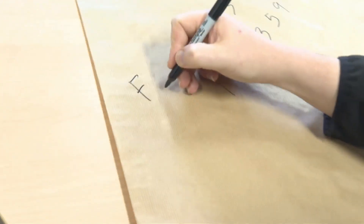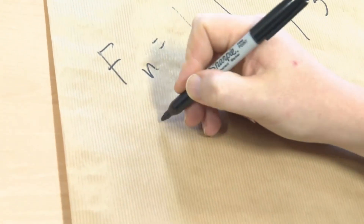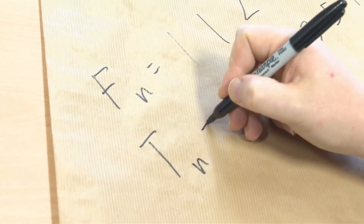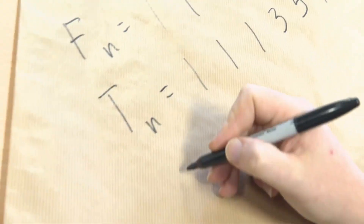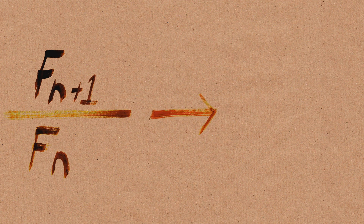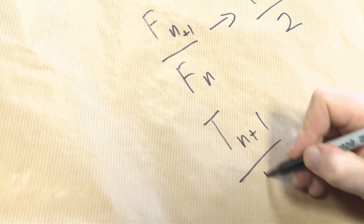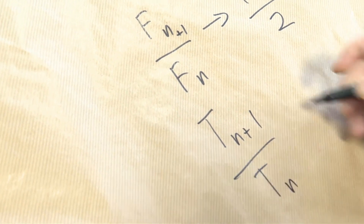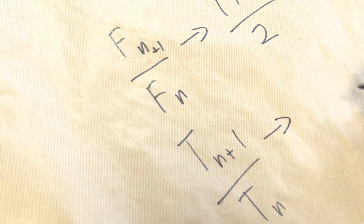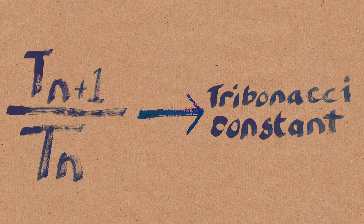It's a bit like the Fibonacci, but it's got 3 instead of 2, so it's called the Tribonacci numbers. Let's call this Fn — this is the Tribonacci Tn — and you have that Fn+1 divided by Fn goes to the Golden Ratio. We can also do the same thing with the Tribonacci numbers, but they go to what's called the Tribonacci constant.